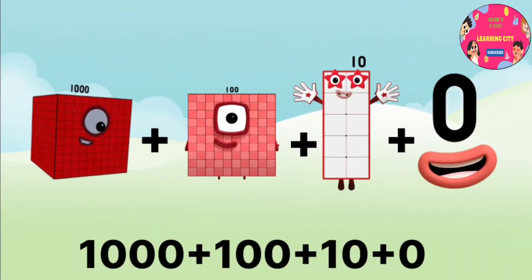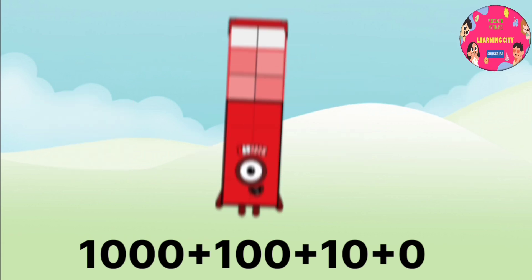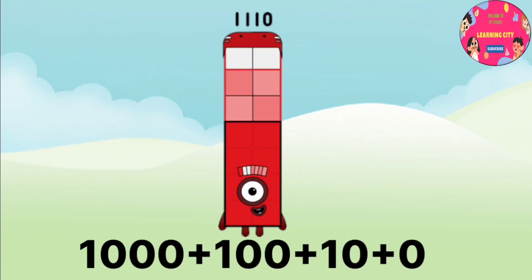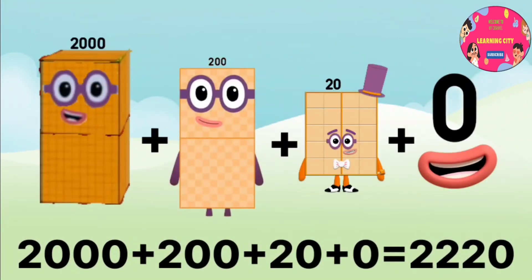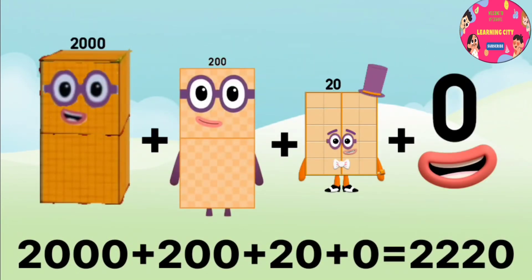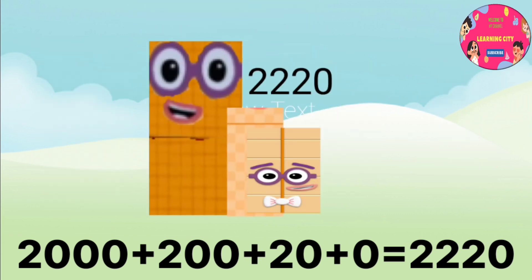1000 plus 100 plus 10 plus 0 equals 1110. 2000 plus 200 plus 20 plus 0 equals 2220.